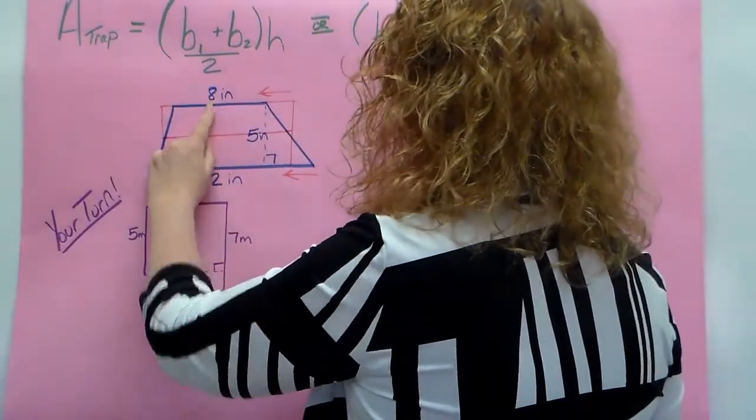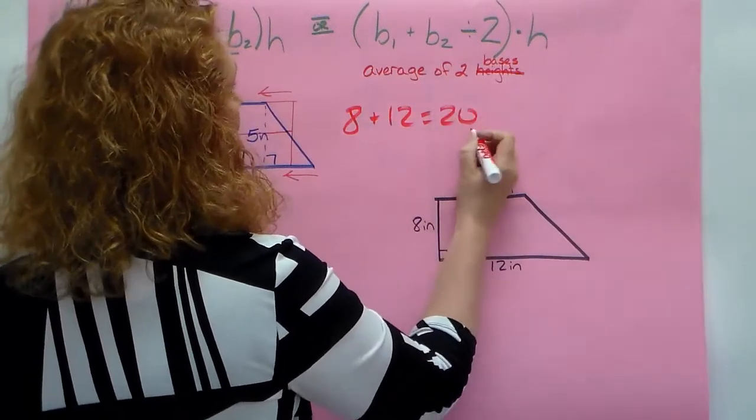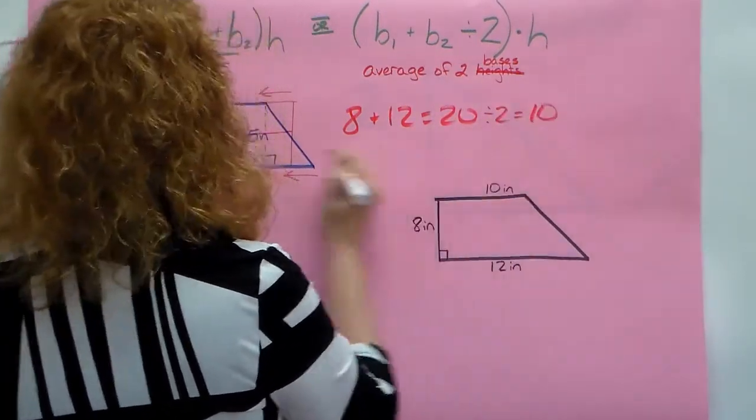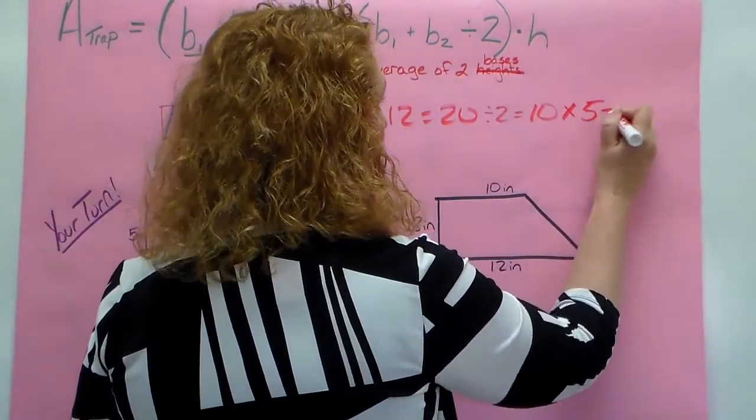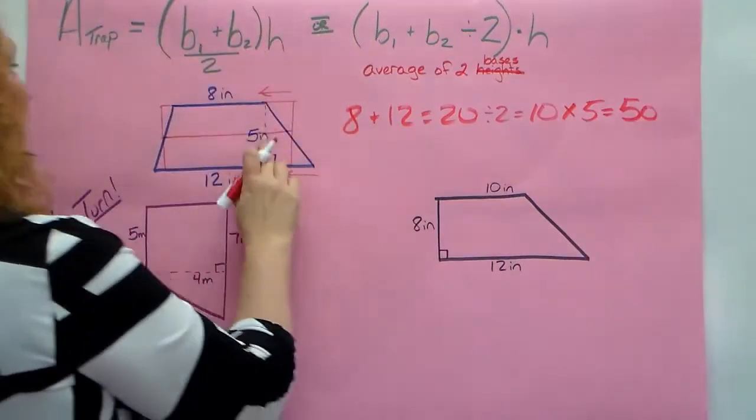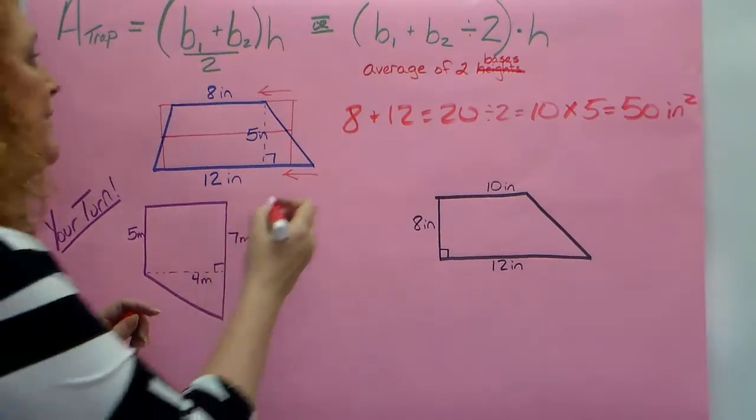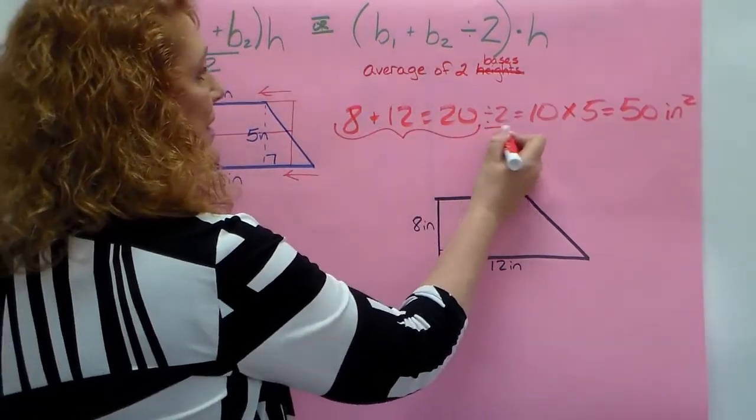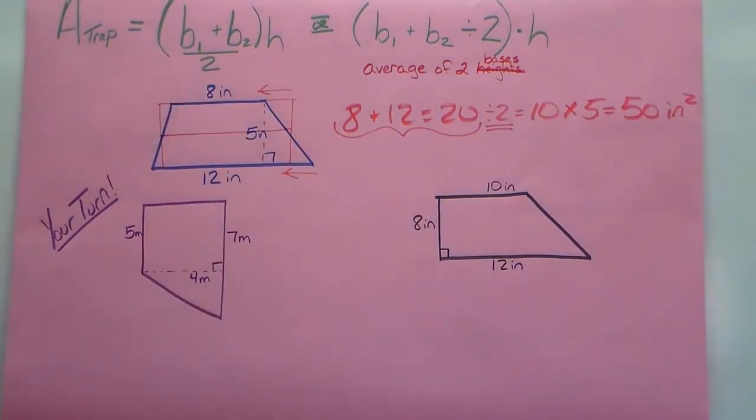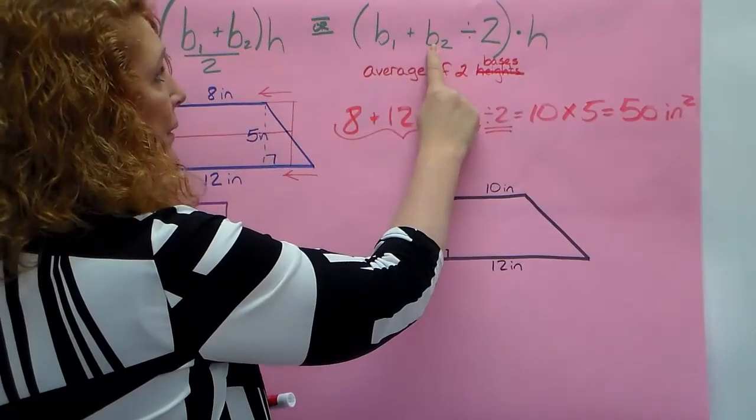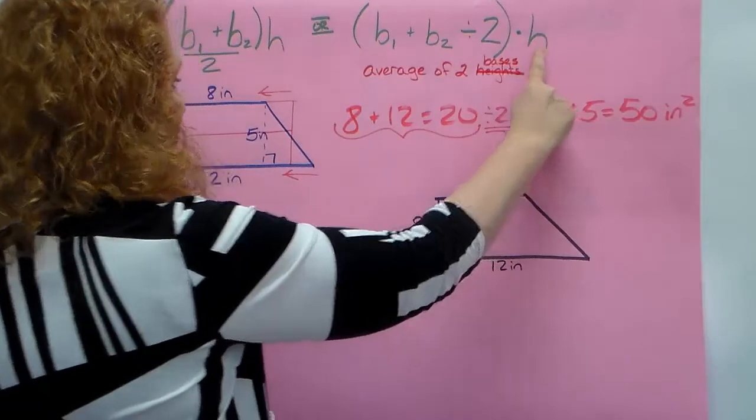So we're going to add - what's 8 plus 12? Well, 8 plus 12 is 20 and 20 divided by 2 is 10, so 10 by 5, and that's 50 inches squared. I need to find the average which is add them up and then divide by however many there are - add them up and divide by 2. So this looks big and ugly but it's add them up and divide by 2. This is the average, and then you multiply it by the height. That's it.